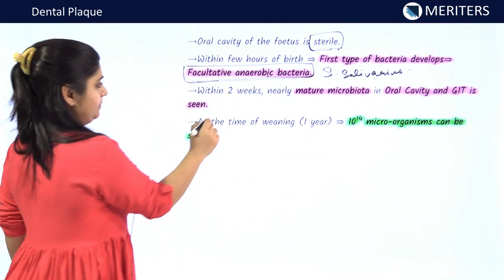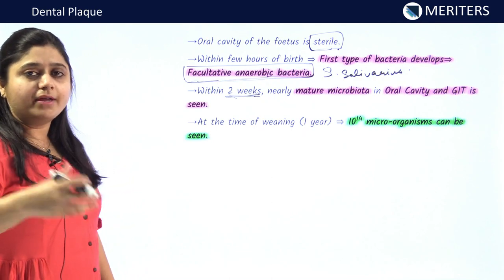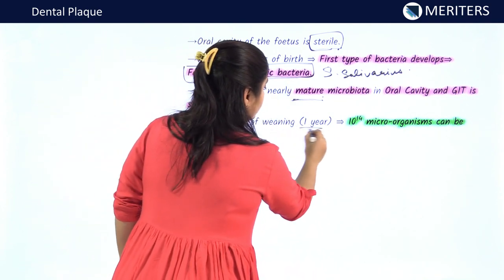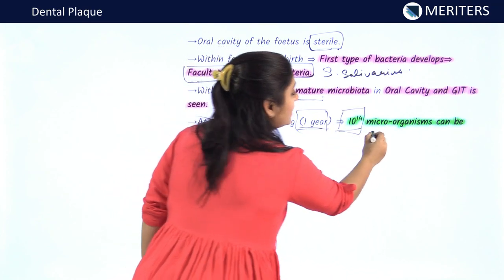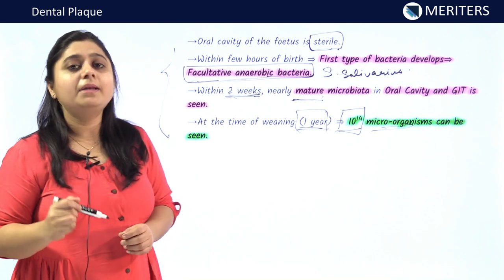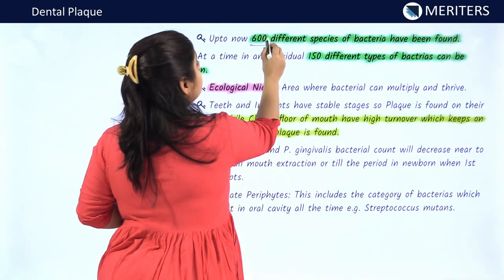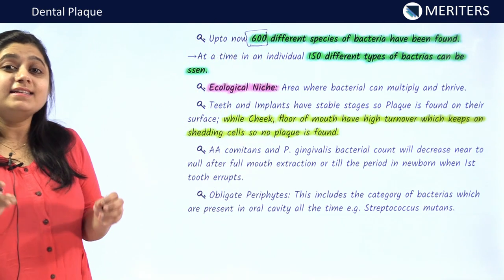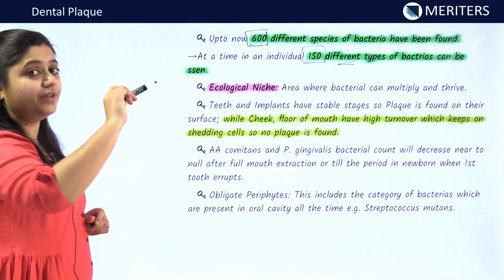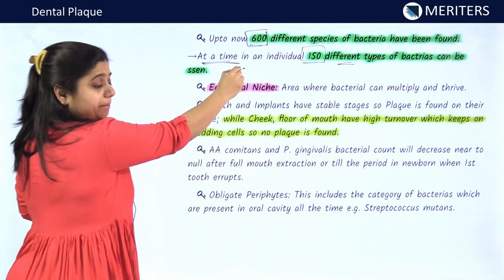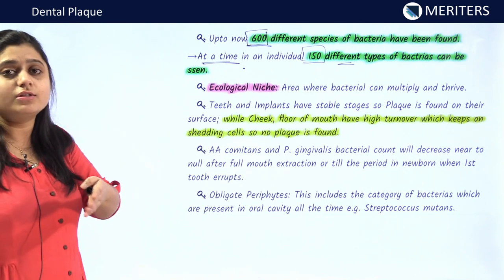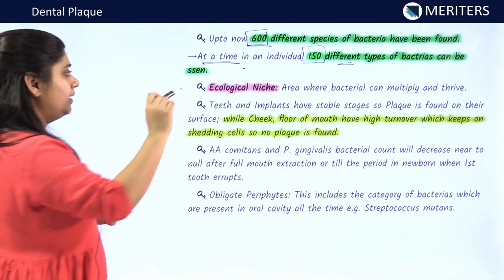Within two weeks, the microbiota in the oral cavity matures, and after one year, approximately 10 to the power of 14 microorganisms can be seen in the oral cavity of the child. Nearly 600 different species of bacteria are found across individuals, and at a single time in an individual, nearly 150 different species of bacteria can be seen in the oral cavity. These points are very important for MCQs.